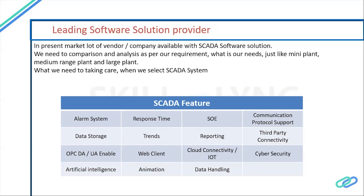SCADA depends on communication protocol support. There are many protocols: Modbus RTU, Modbus TCP/IP, Ethernet, Profibus, SCAN, OPC, and IEC 61504. Each PLC manufacturer has their own proprietary protocol. SCADA needs to support all of them. When ordering SCADA, you must verify protocol compatibility. If a protocol is not supported, you need to buy a gateway to convert from one protocol to a SCADA-compatible protocol, which also increases sampling time from 1 second to 1.2 or 1.3 seconds.